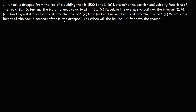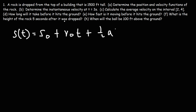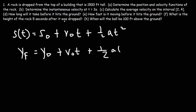In order to solve this problem, we need to be familiar with the general form of the position function. It's equal to the initial position, plus the initial velocity multiplied by time, plus one-half at squared, where a is the acceleration. In physics, you'll see this formula as: y final equals y initial plus v-initial times t plus one-half at squared. It's basically the same thing.